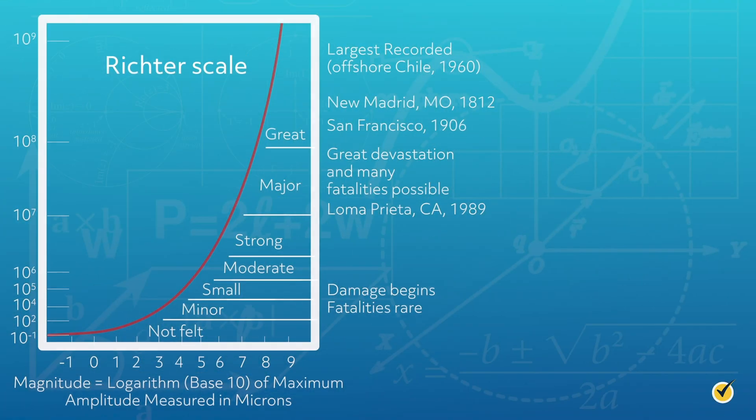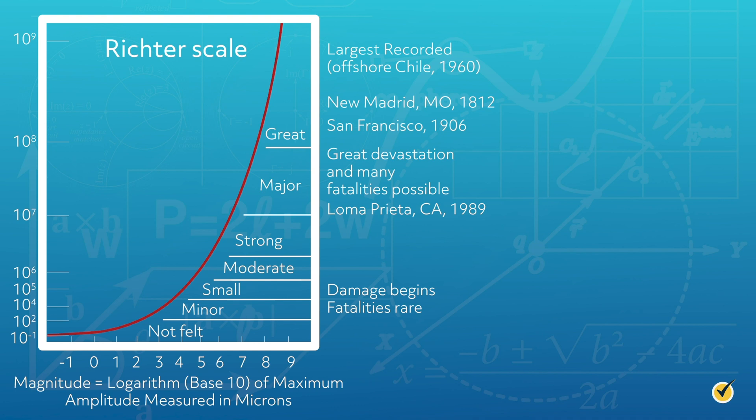Log functions provide a shorthand way of dealing with large numbers. Working with the exponent on a base of 10 is easier to manage than the very large argument. A great example is the Richter scale, which measures the magnitude of earthquakes. For example, an earthquake measuring 7.1 on the Richter scale would translate to the exponential equation, 10 to the 7.1 power, equals 12,589,254 microns, or the log of 12,589,254 equals 7.1.